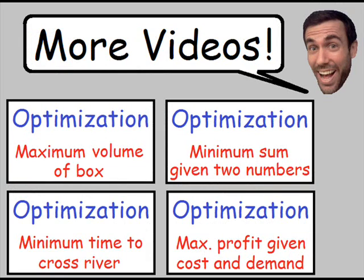I hope this video gave you a better idea of how optimization is used. I have four other optimization videos: finding the maximum volume of a box, finding the minimum sum given two numbers, finding the minimum time to cross a river, and a business example finding the maximum profit given cost and demand. Check these out — all the links are on screen. Thank you so much for watching, and I will see you in my next one.